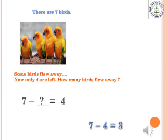Next: how to find a missing number in subtraction. There are 7 birds; some birds flew away and now only 4 are left. How many birds flew away? We write this using subtraction: 7 minus dash equals 4. To find this missing number, subtract 7 minus 4 equals 3. So 3 birds flew away. Here in subtraction, the second number is missing, and we find it using subtraction.